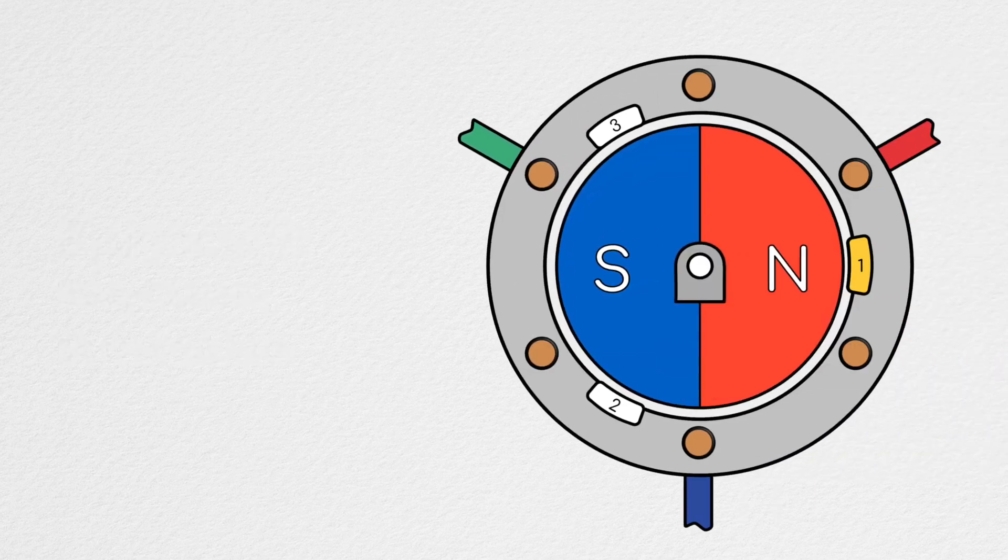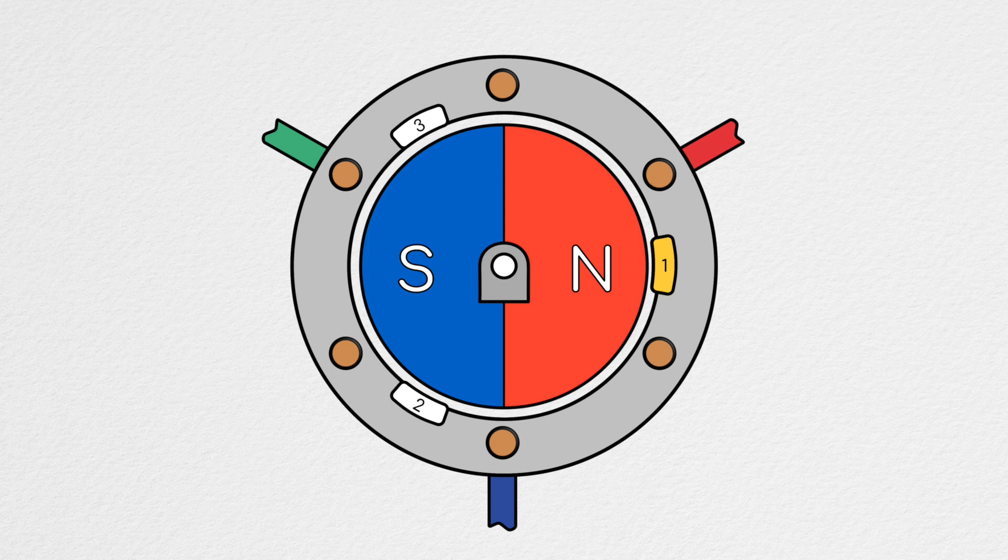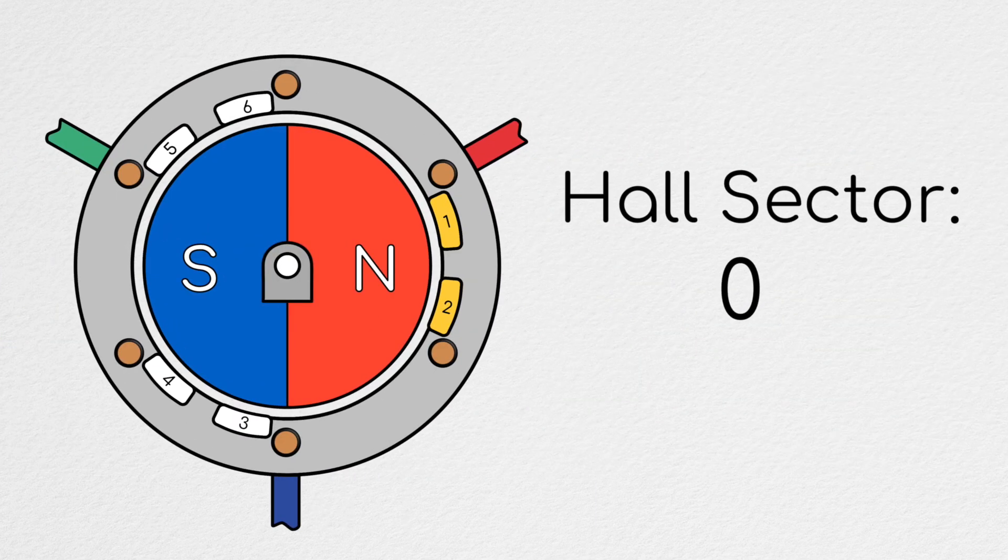We're going to start this episode by performing a thought experiment. What if, instead of having three hall sensors spaced 120 degrees apart, we had six sensors spaced such that they evenly divided the motor's rotation into 12 30-degree sectors.